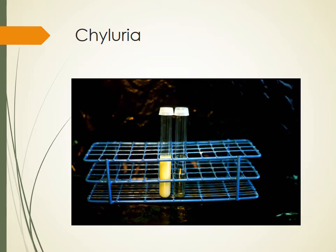Another diagnostic feature is chyluria. We have seen this in the pathogenesis — the urine is creamy, milky white, and opaque due to rupture of lymphatics, and it appears in the urine. Chylous urine itself is very diagnostic. Under microscopy, you can see live, moving microfilaria in the unstained preparation, and you can also stain it for better visualization.